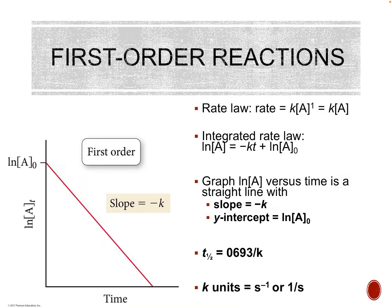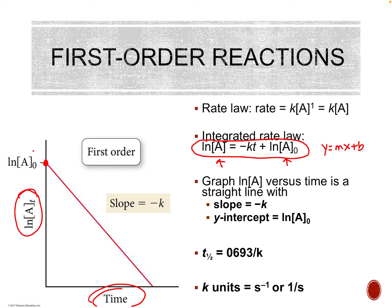Let's look at first order. Our rate law would be rate = K[A]¹, or just rate = K[A]. Our integrated rate law is all about natural logs — very similar to the zero-order form, except instead of concentrations, we now use the natural logs of the concentrations. We're still in y = mx + b form: on the y-axis we have the natural log of [A] instead of just [A]. Our y-intercept is ln[A]₀, time is on the x-axis, and slope is still negative K. The K in the rate law and in the integrated rate law are the same K.